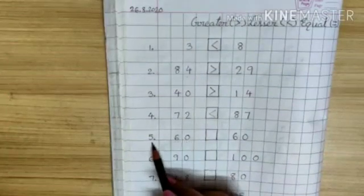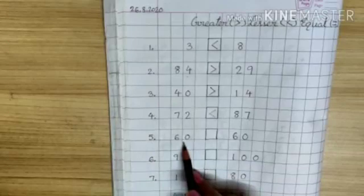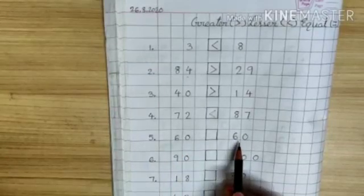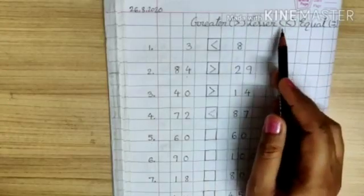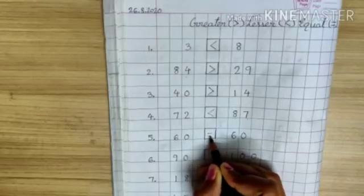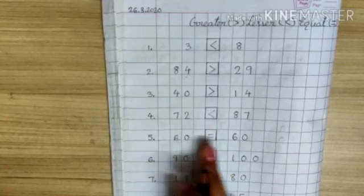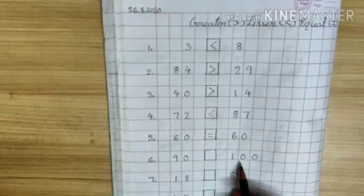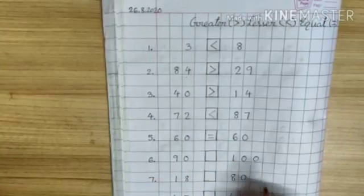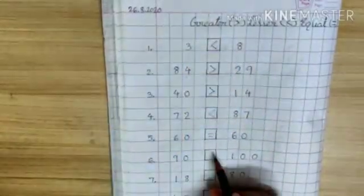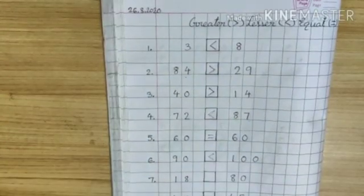Now next, number 5. Here we have number 60 and number 100. Number 100 is bigger, so the crocodile will eat number 100. So we will put this sign.